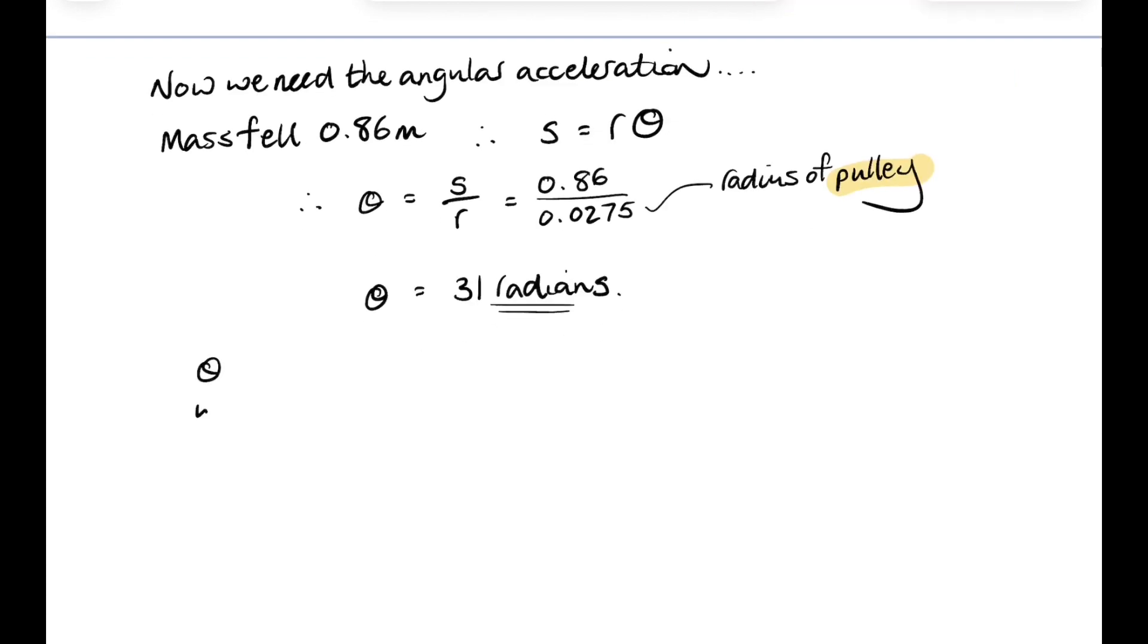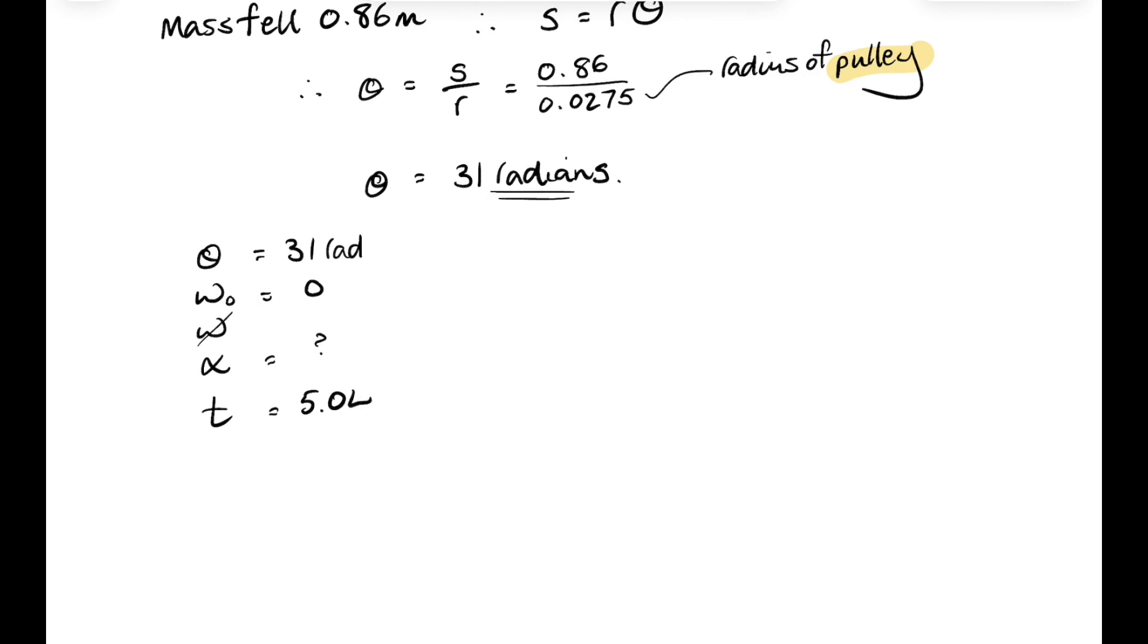And then we can use our rotational equations of motion to work out alpha. We know it starts from rest and the mean time was 5.04. And then using the appropriate rotational equation of motion, we can work out alpha. Now the initial angular velocity was 0. So omega naught t cancels out. And then we'll rearrange it for alpha. So 2 theta over t squared equals alpha.